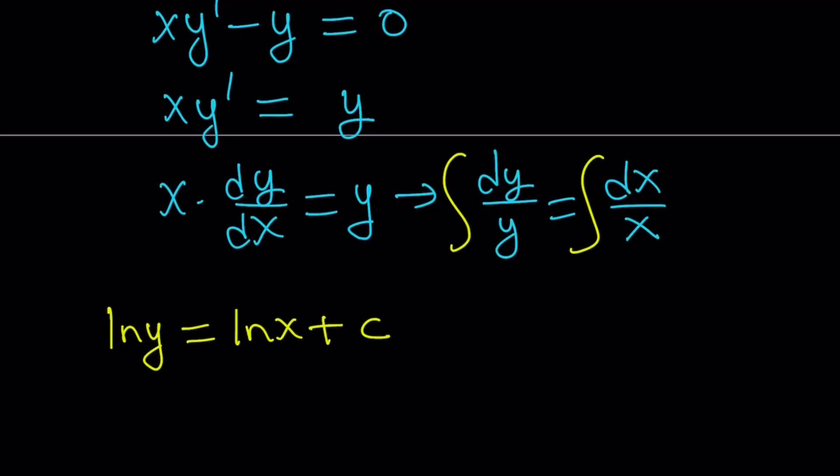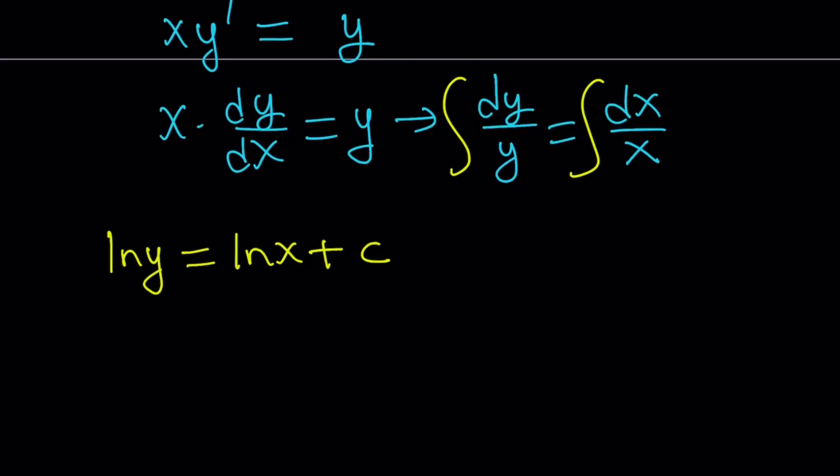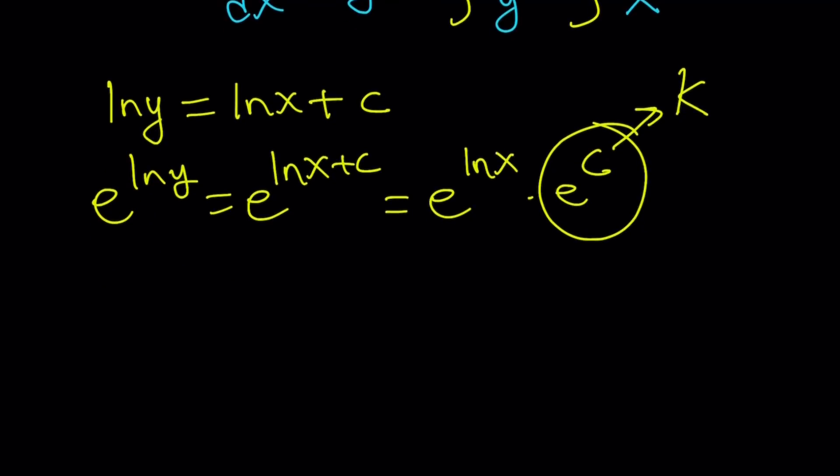So now I want to get rid of the ln and let's go ahead and do e to the power ln y equals e to the power ln x plus c, which can be written as e to the power ln x times e to the power c. Now notice that e to the power c is also a constant. Let's call that k. And now e to the power ln x is equal to x, obviously from properties of logs, and this is equal to y.